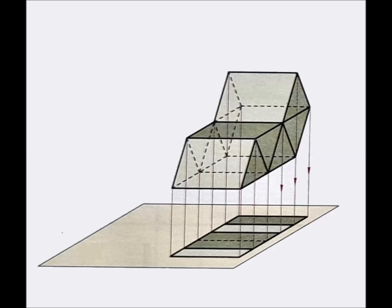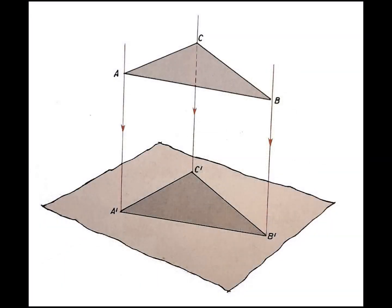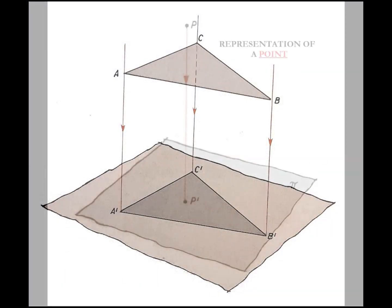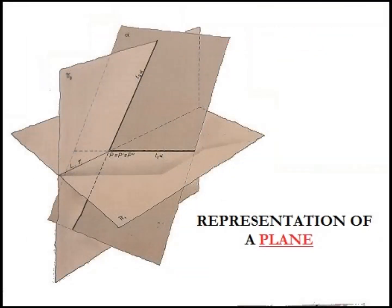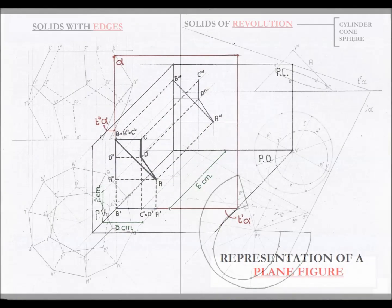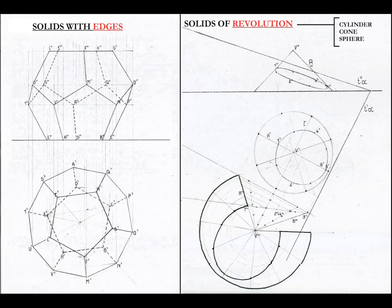The objects represented can be points, straight lines or segments, planes, plane figures, solid figures, which we shall divide into two groups: solids with edges, and solids of revolution.